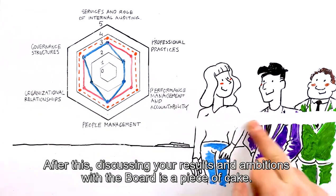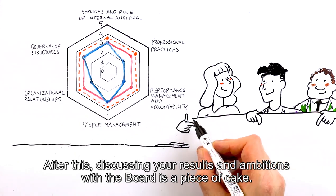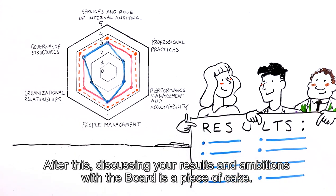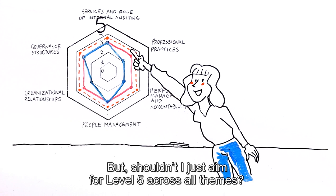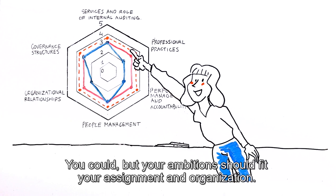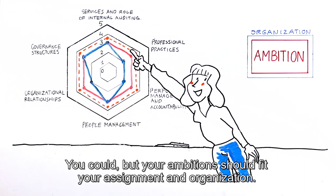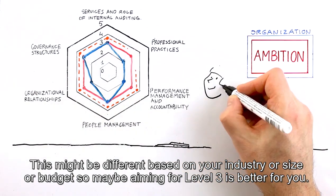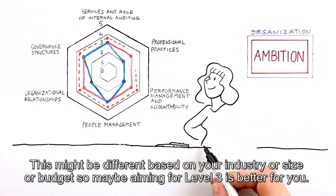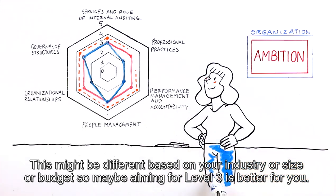After this, discussing your results and ambitions with the board is a piece of cake. But shouldn't I just aim for level 5 across all themes? You could, but your ambitions should fit your assignment and organisation. This might be different based on your industry, size, or budget — so maybe aiming for level 3 is better for you.